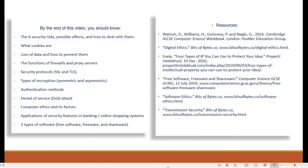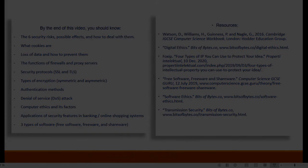And that's it for this chapter. By the end of this video, you should know the 6 security risks, possible effects and how to deal with them, what cookies are, loss of data and how to prevent them, the functions of firewalls and proxy servers, security protocols, types of encryption, authentication methods, denial of service attack, computer ethics and its factors, the applications of security features in banking or online shopping systems, and the 3 types of software which include free software, freeware, and shareware. Thank you so much for watching, and I'll see you for chapter 9 which will be problem solving.